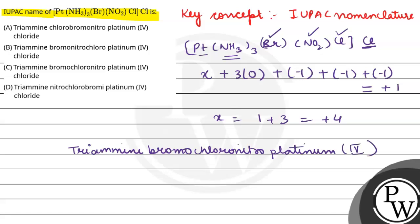We have the correct option. That is triamine bromo chloro nitro platinum 4, and then we have chloride in the end. So the correct option is option number C. Hope you find the answer, best of luck.